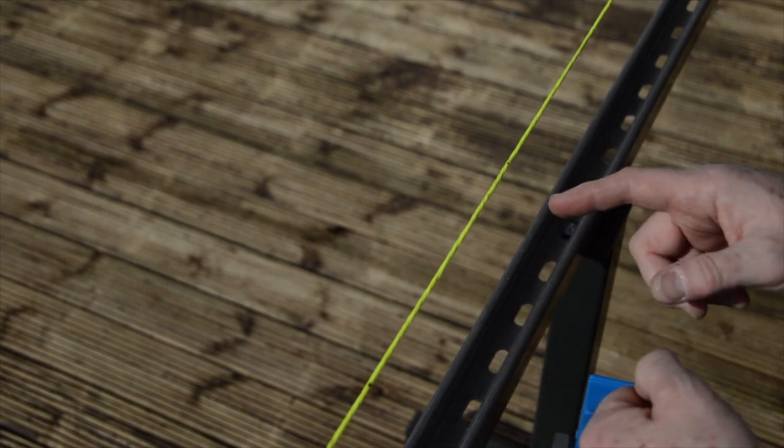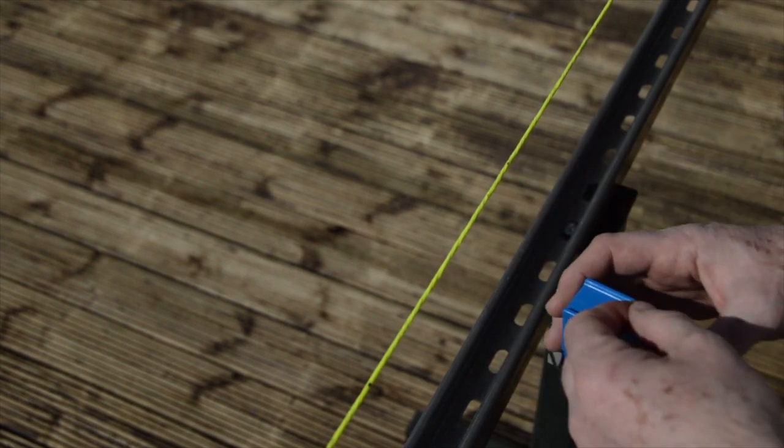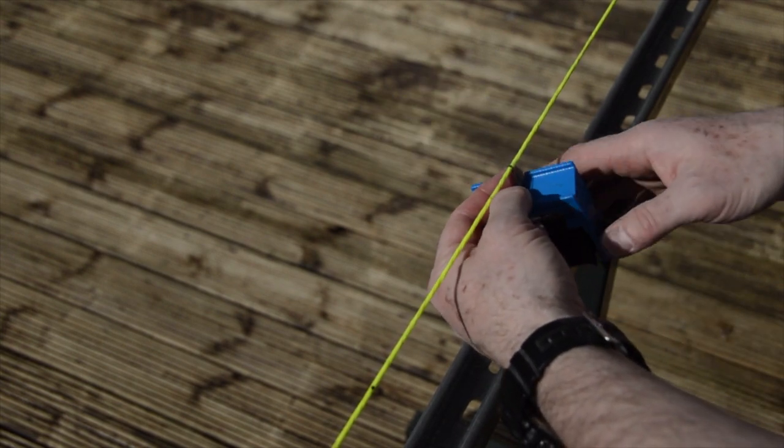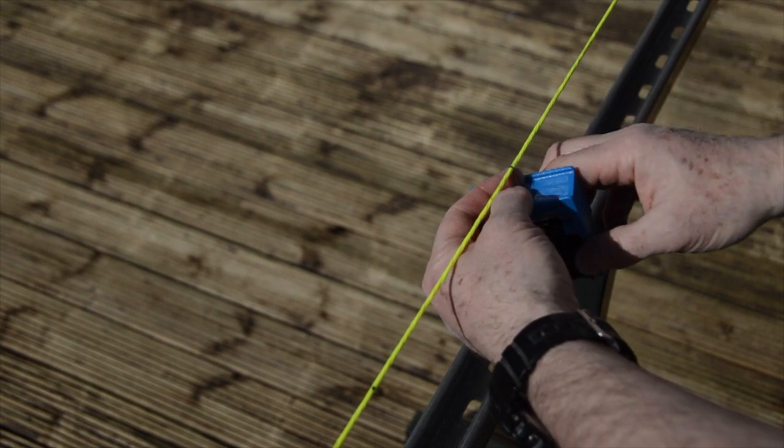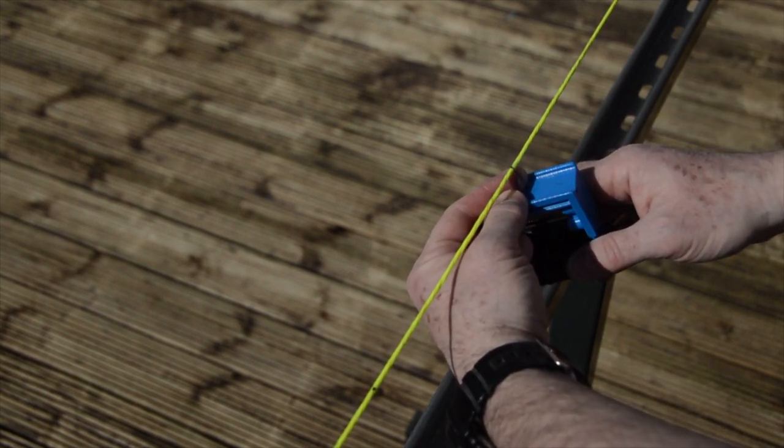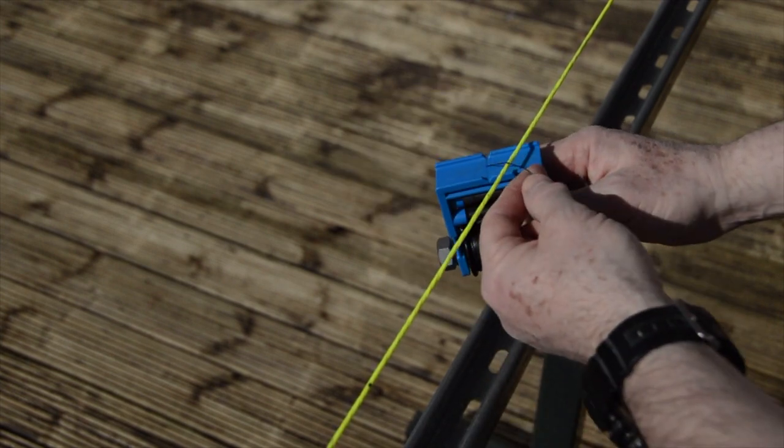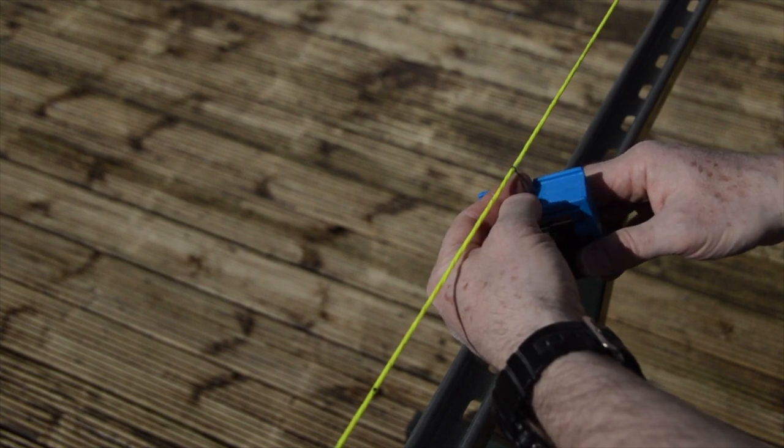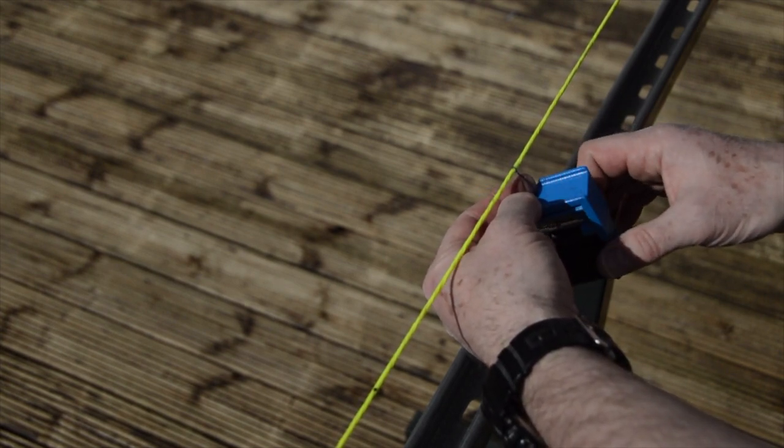First things first—we've got to start this serving. This is probably the bit that folks have the most difficulty with, but if you follow a couple of simple rules it's pretty straightforward. I've looped the serving material over the top of the string and I've got the serving tool towards me.